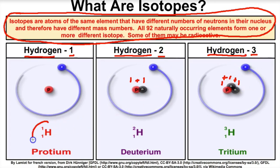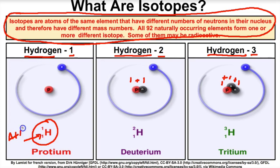You might be wondering what this symbol is right here — this is a nuclear symbol or isotope notation. In a different video, we learned how to determine how many protons, electrons, and neutrons there are if you're given this isotope notation or nuclear symbol. This number here is the atomic number, and this number here is going to be your mass number — the number of protons plus neutrons. In this example, there's only one proton, so the mass number is one.